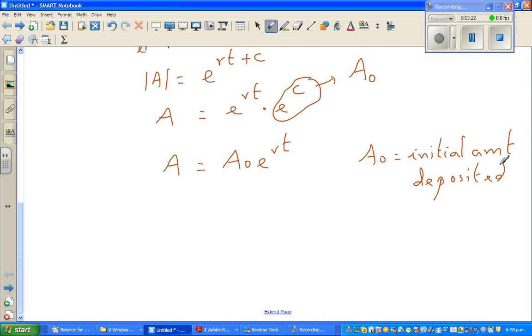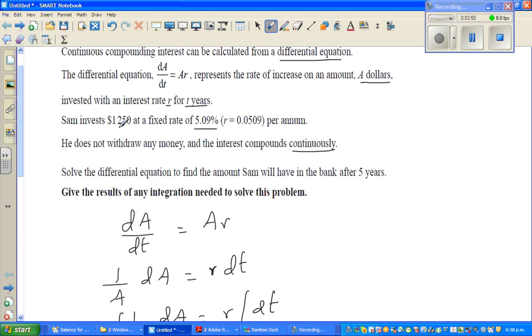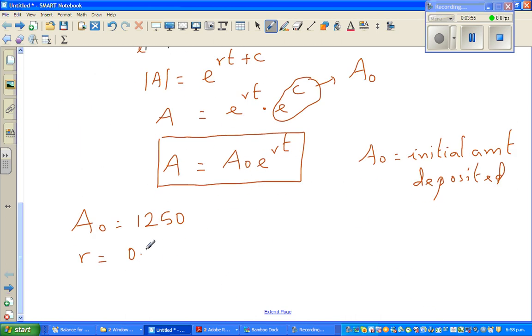This makes sense: the amount you get after a particular time is A₀, the initial amount, times e^(rt). In this particular case, our A₀ is $1,250, the rate r is 0.0509, and t is 5 years.